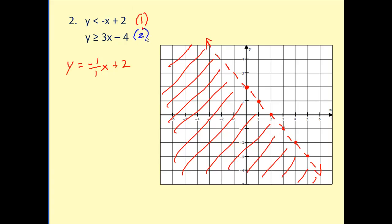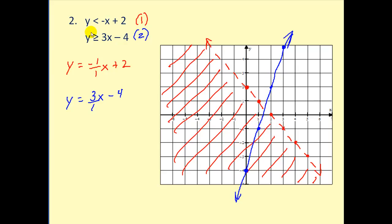Next, we'll graph and shade the second inequality. We're going to graph the line y equals three x minus four. Our slope will be three over one, and our y-intercept is negative four. Slope of three over one: up three, right one. Again, it's a solid line. It reads y is greater than or equal to, so that would be above the line. I'm taking the shortcut because they are solved for y.